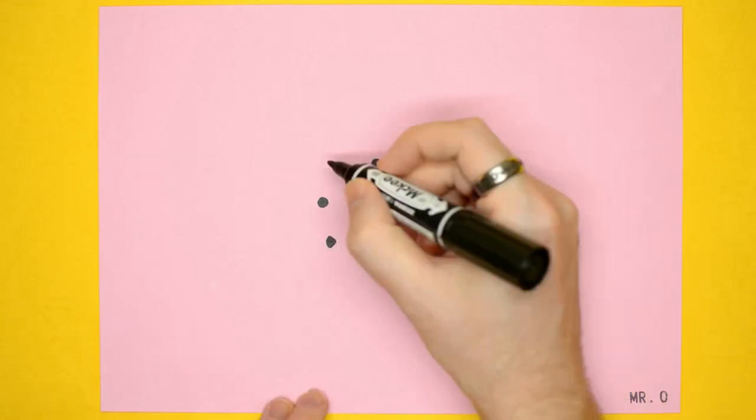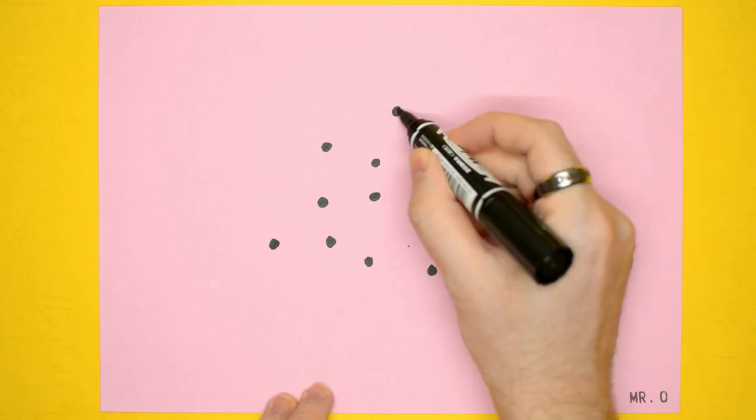You start with two spots, or three, or four, or five, or six, or seven, or eight, or nine, or ten, or eleven. But let's start with two.